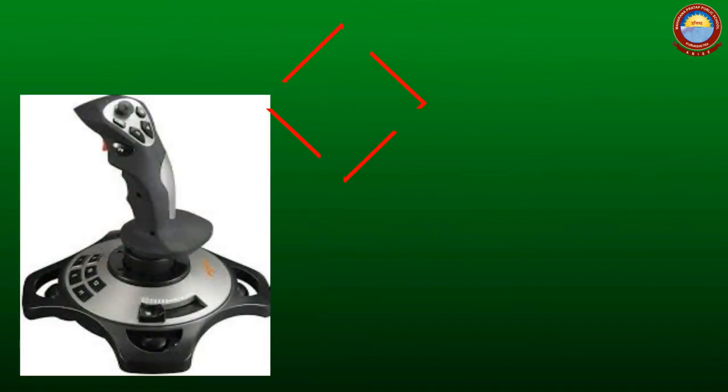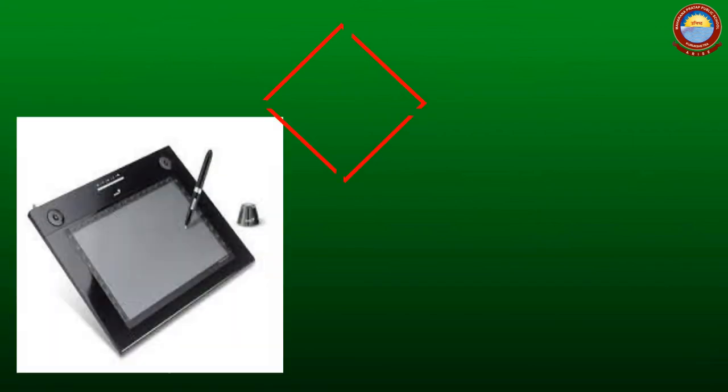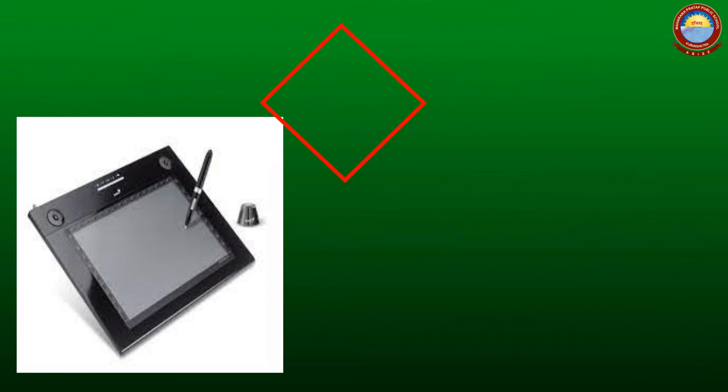Joystick. It is a pointing device. It can move in all four directions. It is mainly used for playing games. Light pen. It is also a pointing device. It is used to select an item from the menu. It is also used to draw pictures on the monitor.